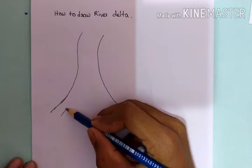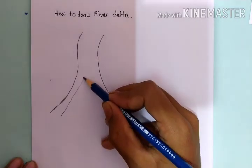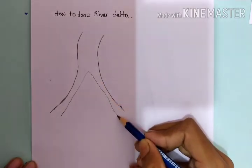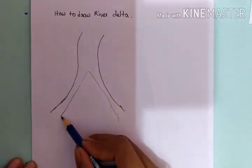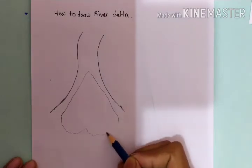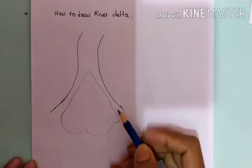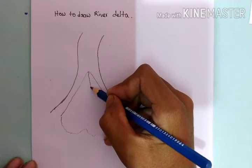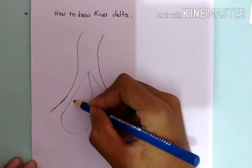Now we will make a big delta here, and after that we will divide it and make so many deltas in this way. And now we will divide it in this way.